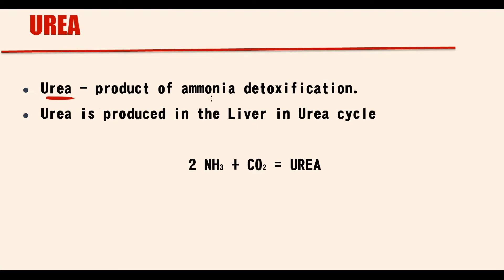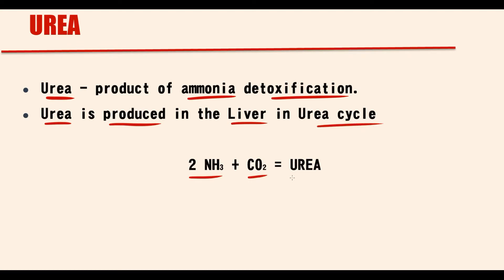Urea is a product of ammonia detoxification. Urea is produced in the liver in the urea cycle from two ammonia molecules and carbon dioxide.